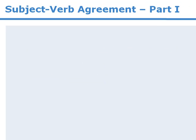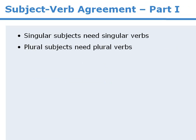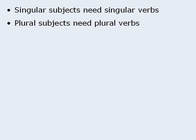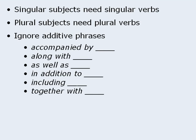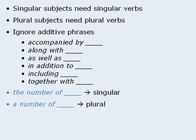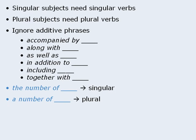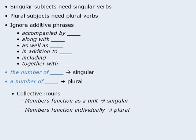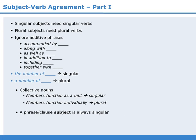Let's summarize. In this lesson we learned that the subject and verb must agree in number. We learned that we should ignore additive phrases. We learned the rules for 'the number of' and 'a number of.' We learned how to handle collective nouns, and we learned how to handle phrases and clauses functioning as subjects.